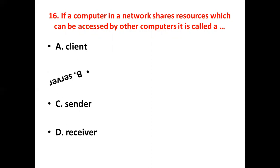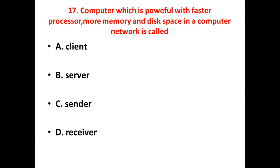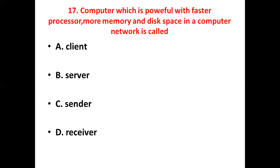Fifteenth bit: If a computer in a network accesses resources that are shared by other computers, it is called a — Option B: client. Option C: receiver. Option D: sender. Answer: Option B, client.